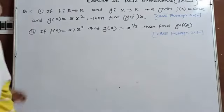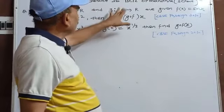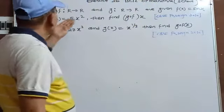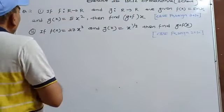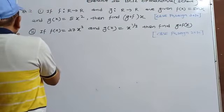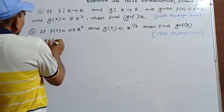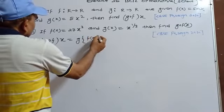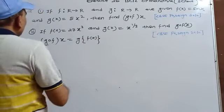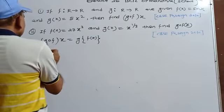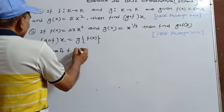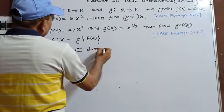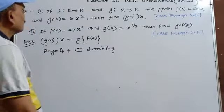Second example: f is R to R with f(x)=sin(x), and g is R to R with g(x)=5x². Find gof(x). gof(x) = g(f(x)). gof is defined when the range of f is a subset of the domain of g. Since domain of g is R, any range will be a subset of R.